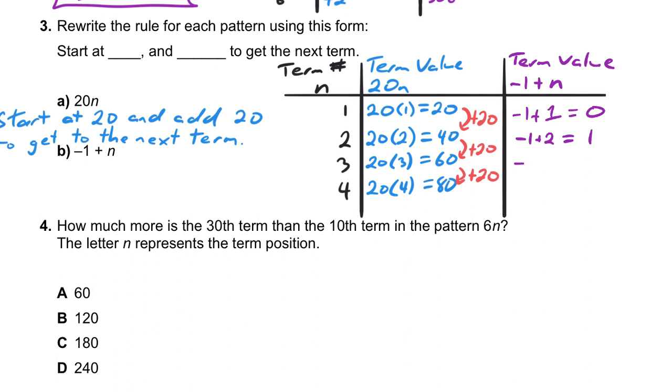And in the fourth, we have negative 1 plus 4. We substitute the n for a 4 and we get 3. So what is our rule when it comes to the words? It would look like this: Start at 0, because we started at 0, and we add 1 each time to get to the next term.